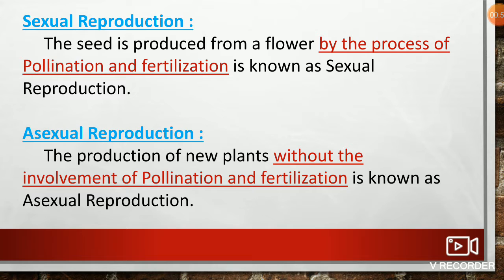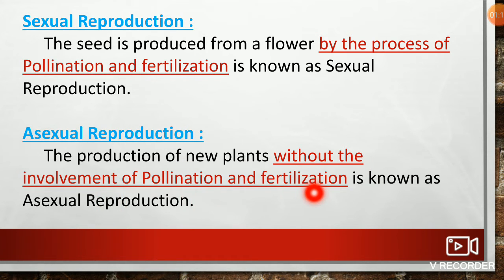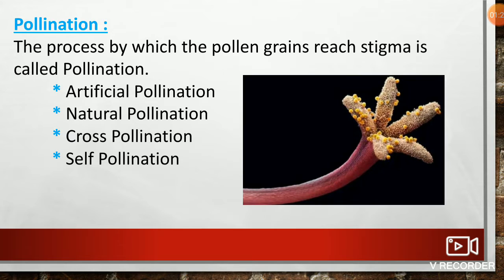Sexual reproduction is when a seed is produced from a flower by the process of pollination and fertilization. Asexual reproduction is the production of new plants without the involvement of pollination and fertilization.